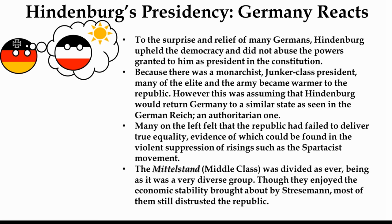To the surprise and relief of many Germans, Hindenburg actually upheld democracy and didn't abuse his powers as granted by the constitution. For example, under Article 48, if there was a reasonable threat, the president could bypass parliament and take power solely into his own hands — and the president also controls the army. But Hindenburg didn't do this. Because he was a monarchist from the Junker class, a lot of the army elite became warmer to the republic, though this was somewhat fallacious. He did stick to right-wing policies — banning pornography and enacting homophobic laws — which the right wing appreciated.